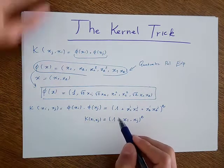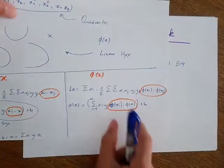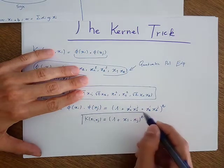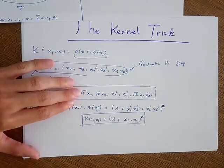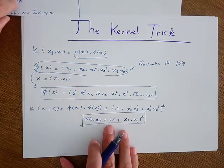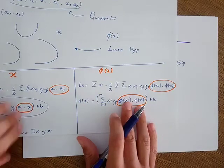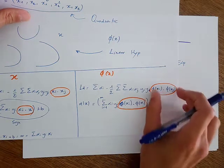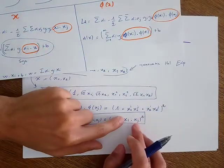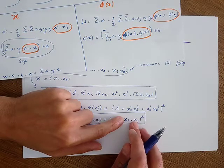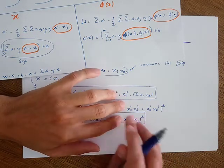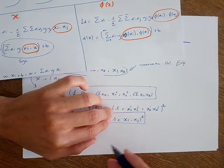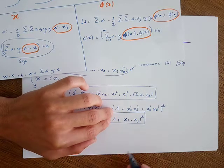I can now replace the dot product in the transformed space with this kernel expression. The reason this is useful is that I can train my model without performing any transformation — I'm working just with features in the original feature space, with no mapping to the new feature space. The advantage is that the number of computations or operations is decreased.